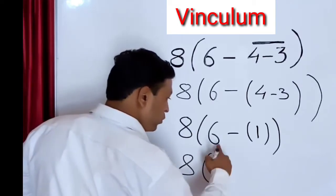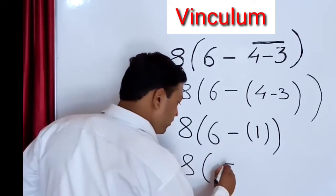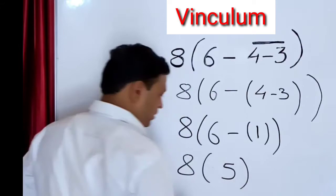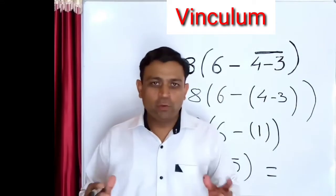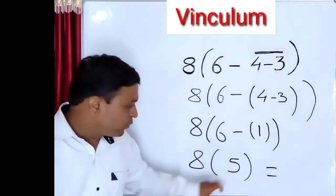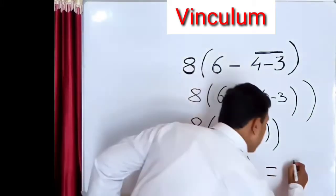In the next step, after that, we have to minus 1 from 6, we get 5. Then friends, we know that 8 into 5 is equal to 40, we have to write 40.